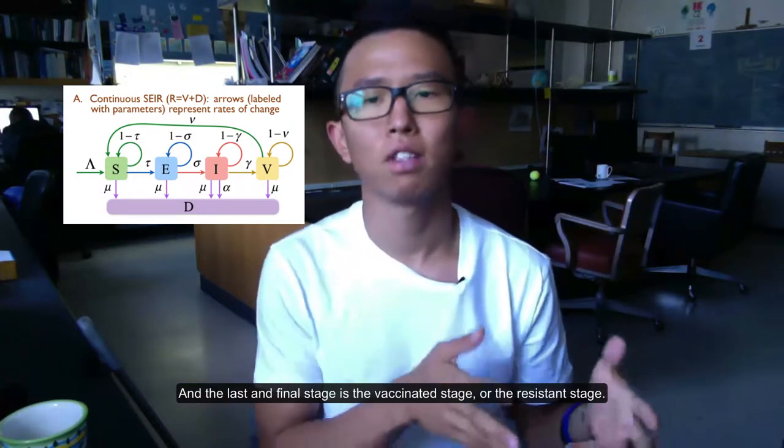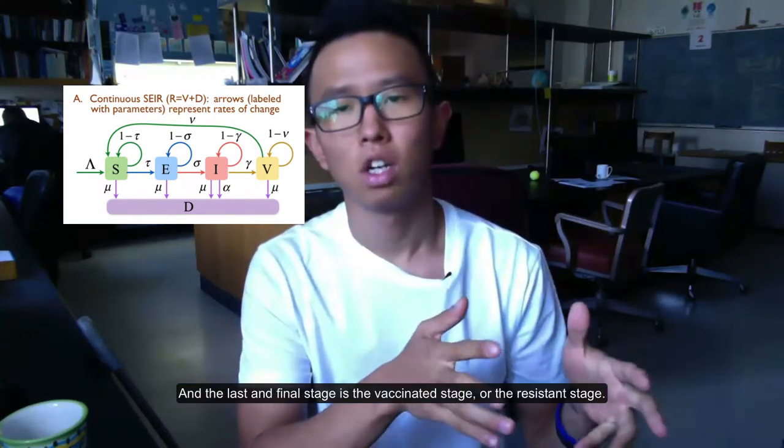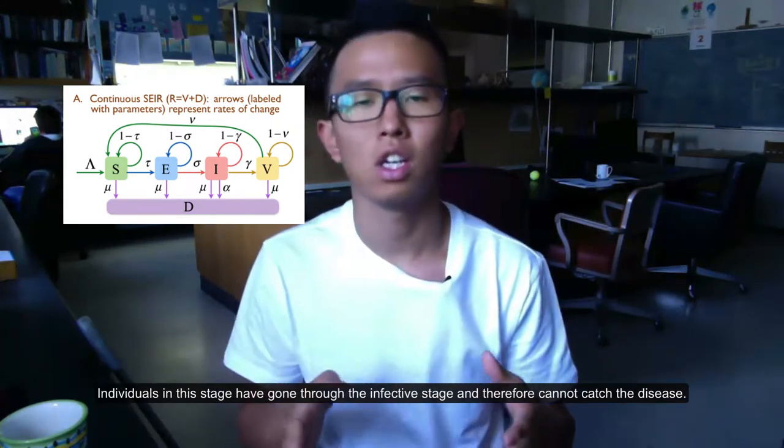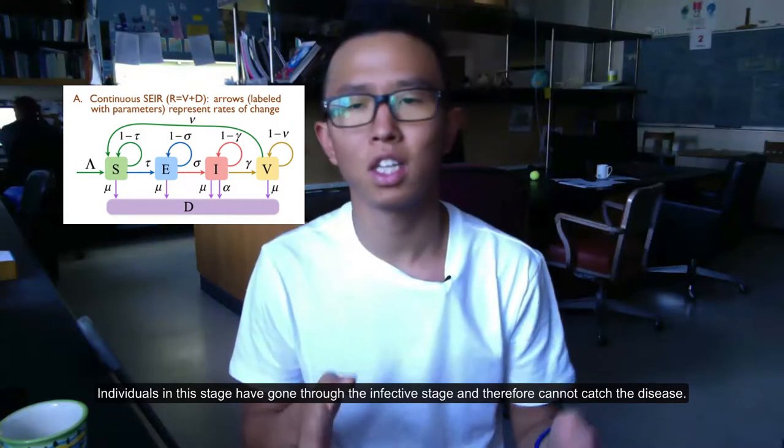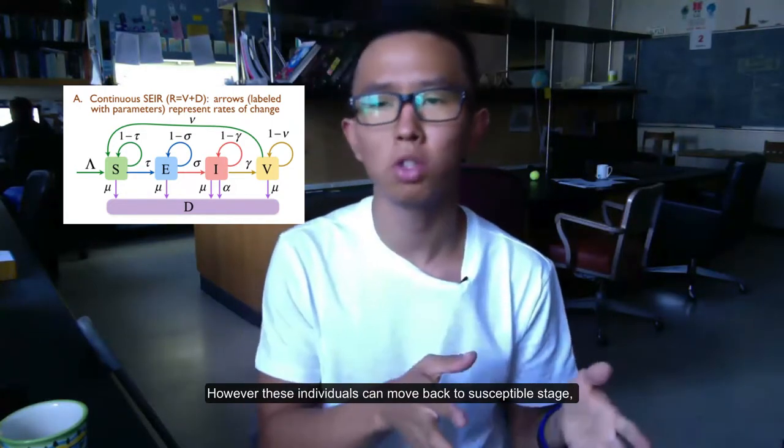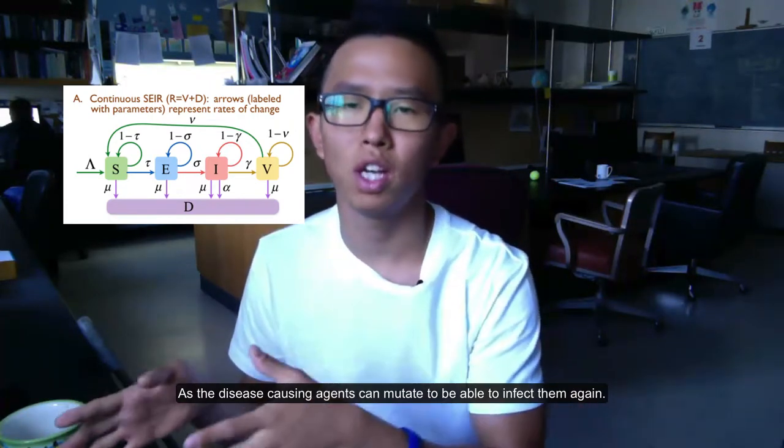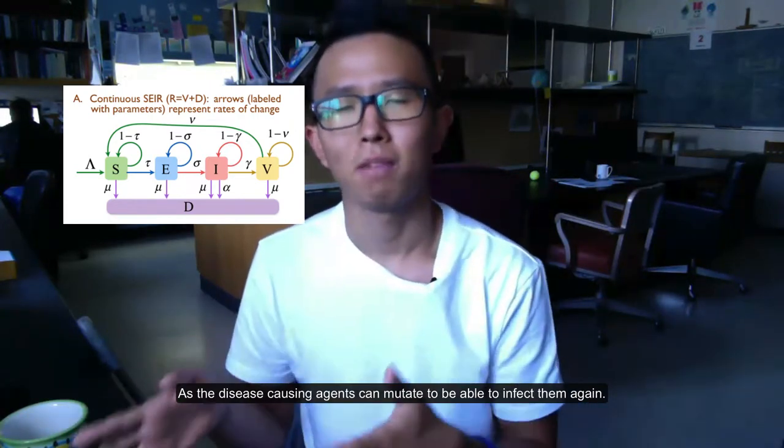The last and final stage is the vaccinated stage or the resistance stage. Individuals in this stage have gone through the infective stage and are immune and therefore cannot catch the disease. However, these individuals can move back to susceptible stage as the disease-causing agents can mutate and become able to infect them again.